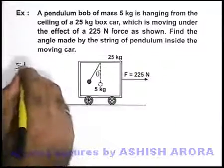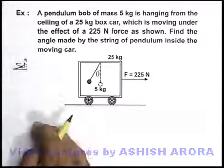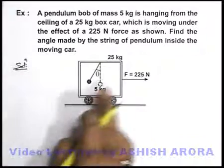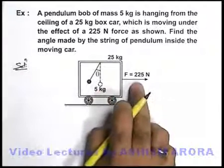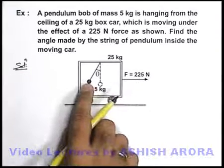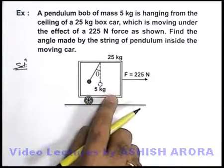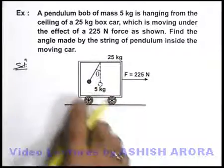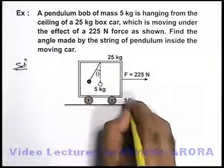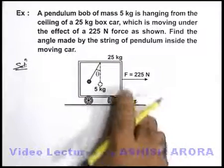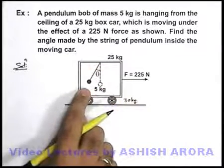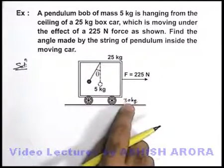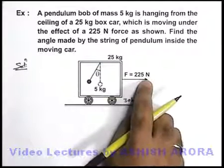Here in the solution we can directly state, as the whole system is moving toward right due to the force, and as the pendulum bob will be at rest with respect to the box car, we can consider that this whole system is of mass 30 kg: 25 kg is that of car and 5 kg is that of bob. And the system of 30 kg is pulled with a force of 225 newton.